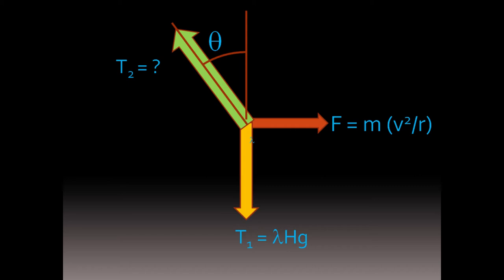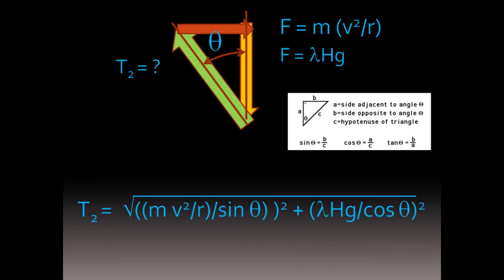But as you can see, the outward centrifugal force is not at a small angle. Using trigonometry, we get a tension force in the chain in the curve like this.